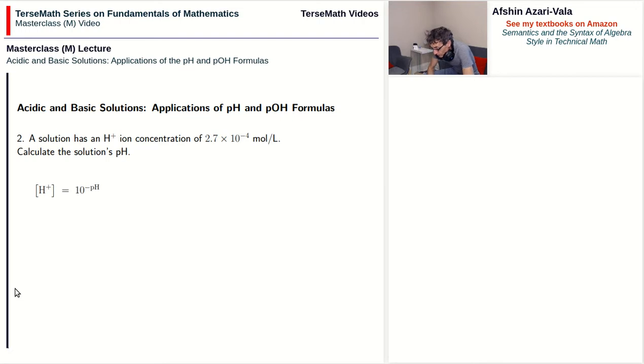We start with the formula: the concentration of H plus is equal to 10 to the power of negative pH. And because we want to find pH we solve the equation for pH. The exponent negative pH becomes equal to log to the base 10 of the concentration of H plus. And now we get rid of the negative sign and we get pH is equal to negative log of the concentration of H plus.